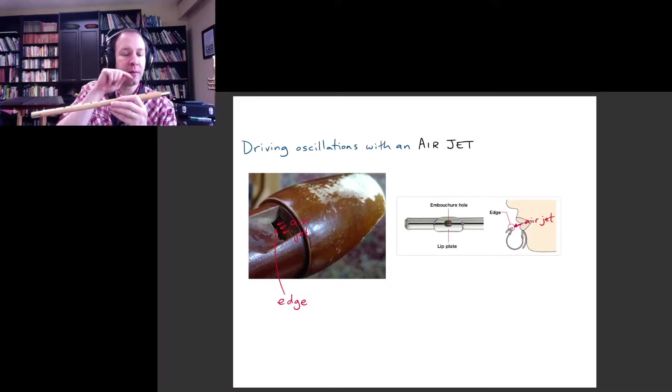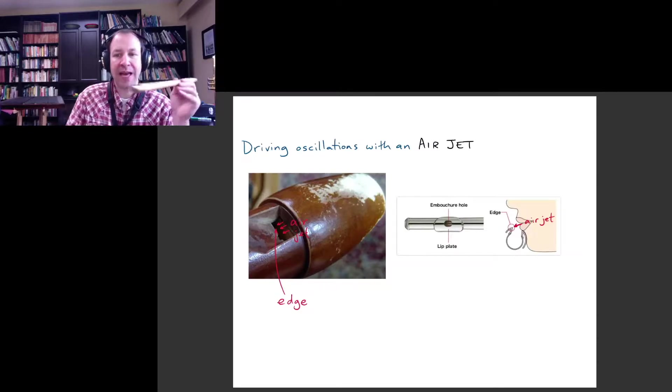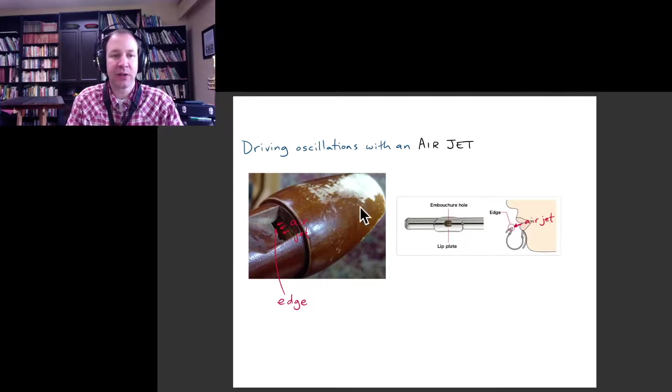That you basically aim for the far edge of this embouchure hole. And so that's the situation with the flute and the recorder.